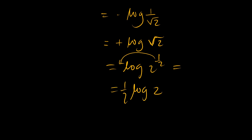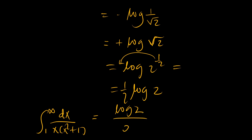So our integral from x equals 1 to infinity of 1 over x(x squared plus 1) equals log(2) over 2. Both methods give the same answer. It's all about flexibility in which approach you choose. Thank you for your attention — until next time, bye bye.